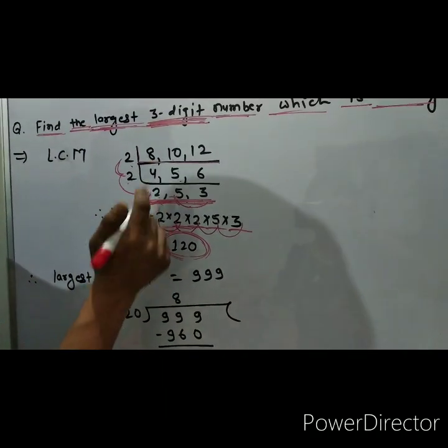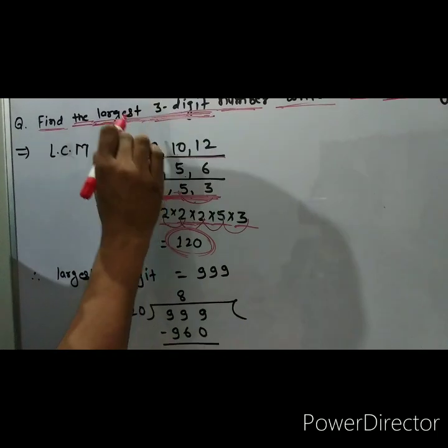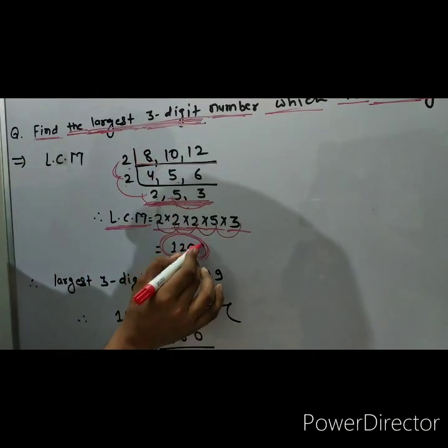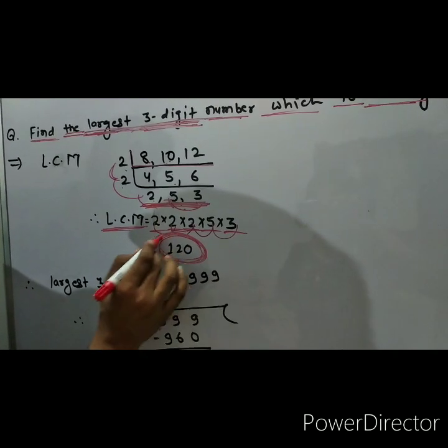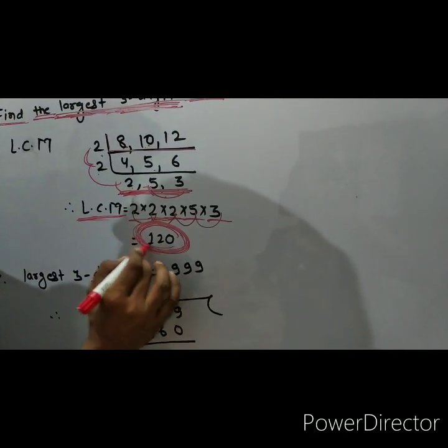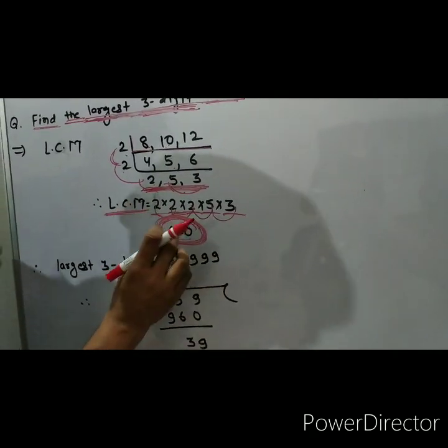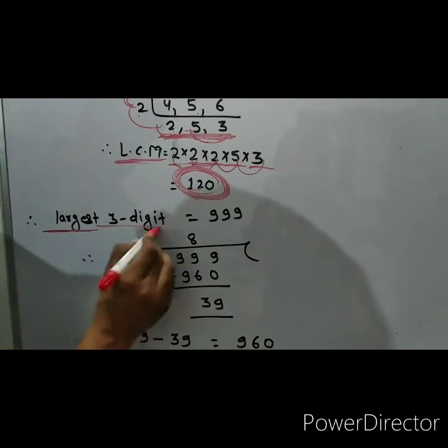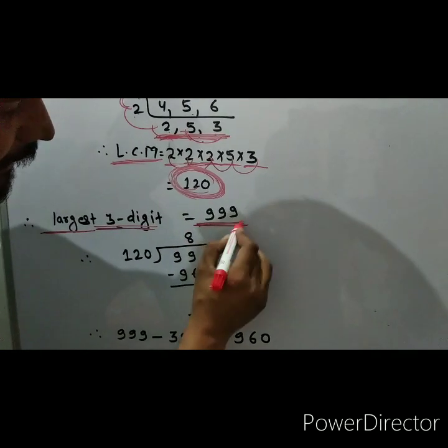But now, you have to find which number? Three-digit largest number which is divisible by 8, 10, and 12. It is divisible by 8, 10, and 12, but it is not the largest 3-digit number. So now look at here. We know that largest 3-digit number is 999.